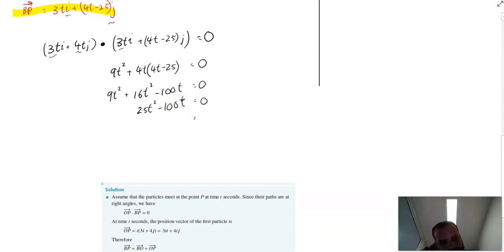And then we can set that up to be, I see a common factor of 25T, bracket T minus 4, equals zero. So we get two answers for T here. We can say, therefore, T is equal to zero, because 25T must be equal to zero. Or T is equal to 4.